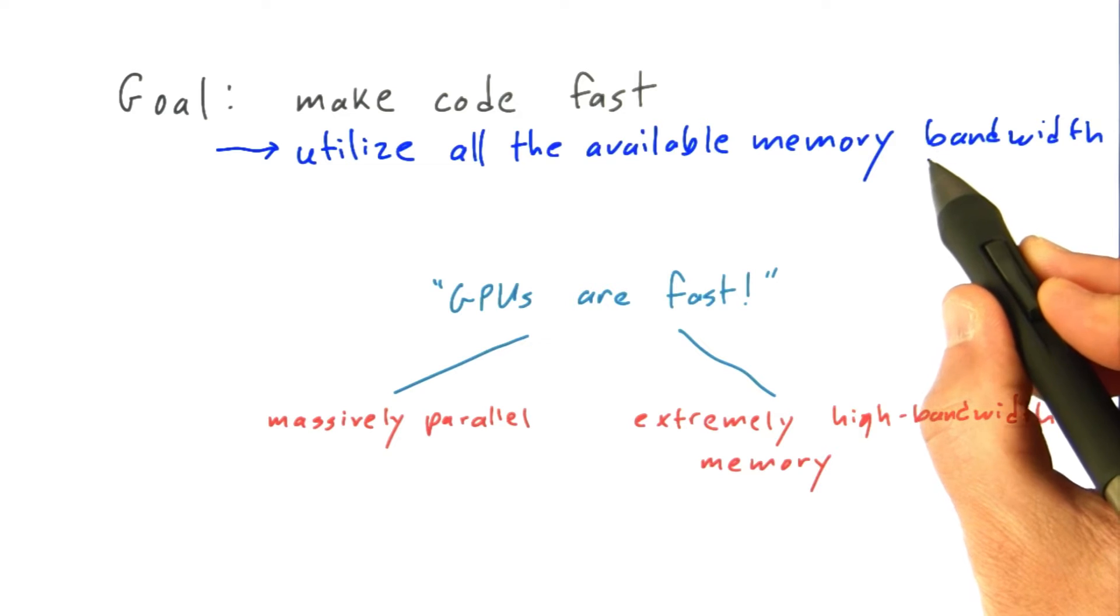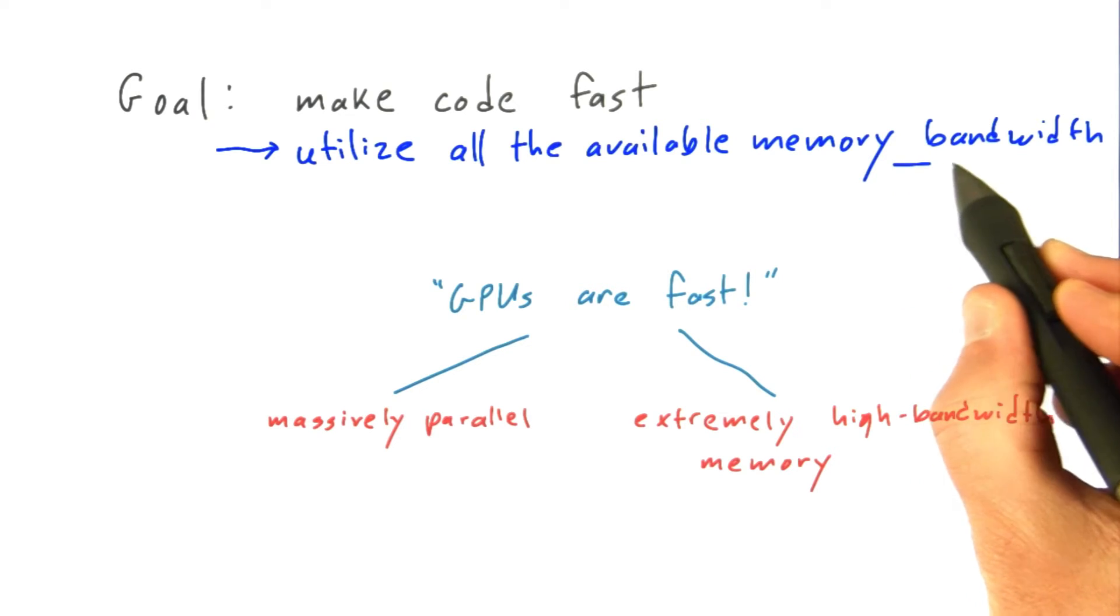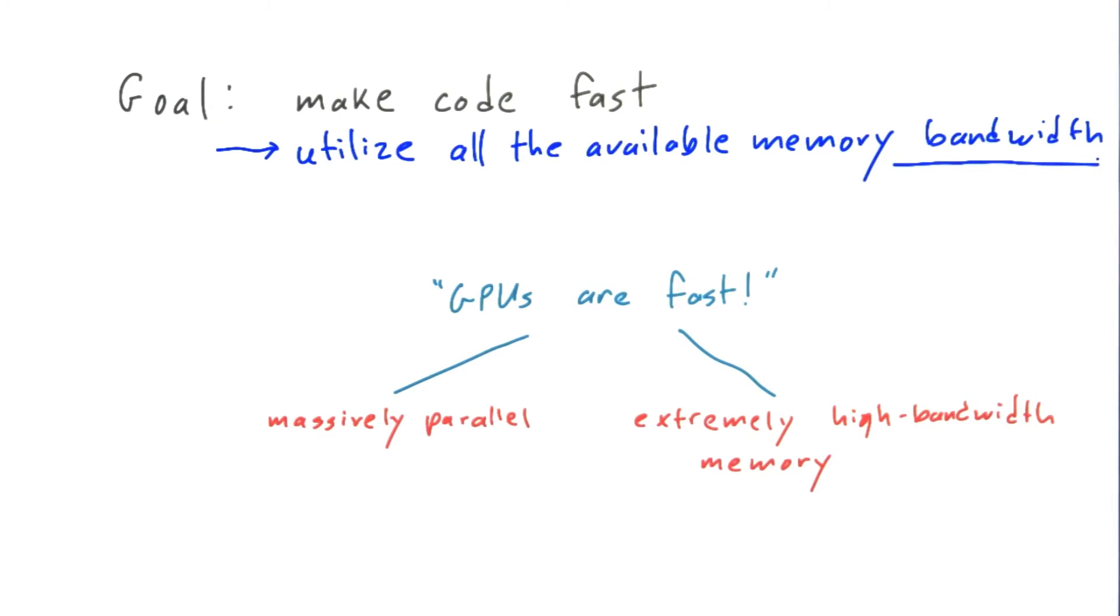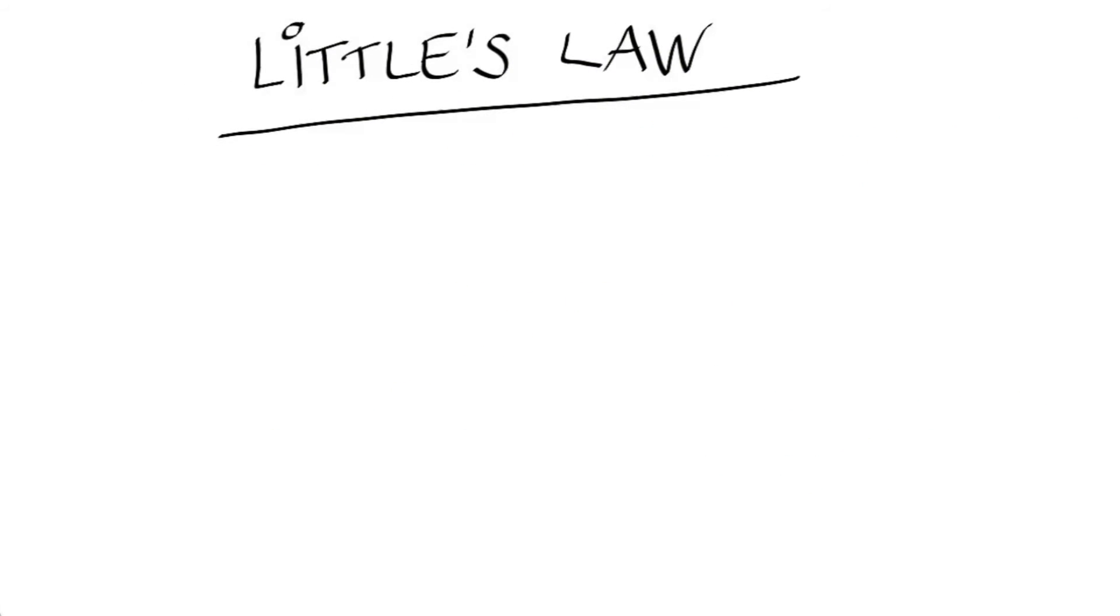Now I really want to ask the question a little bit more rigorously. What do we mean by utilizing all the available memory bandwidth? And this is going to bring us to a very important, very simple principle called Little's Law. Let's have the talented Kim Dilla illustrate this for us.